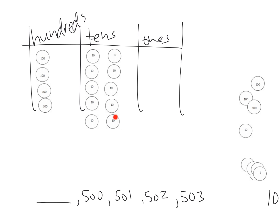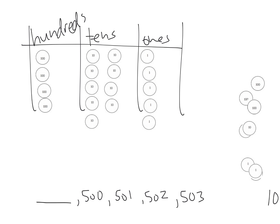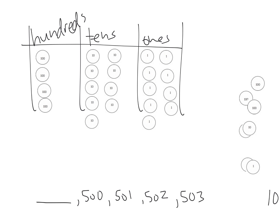I need to take one of these tens and cash it in for ten ones — one, two, three, four, five, six, seven, eight, nine, ten. Now I have four hundreds, nine tens, and ten ones — that's still 500, because all I did was cash things in without taking anything away. But now do I have a one I can take away? Yes! One less than 500 becomes 499.